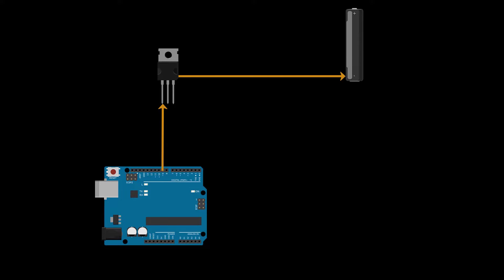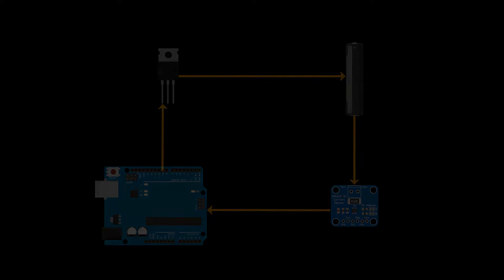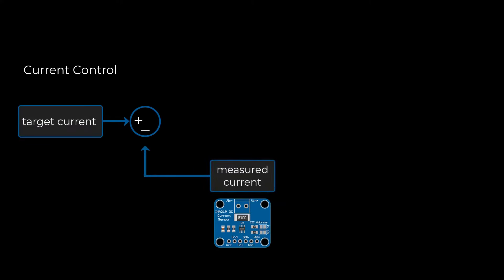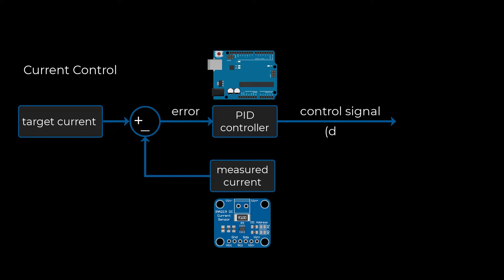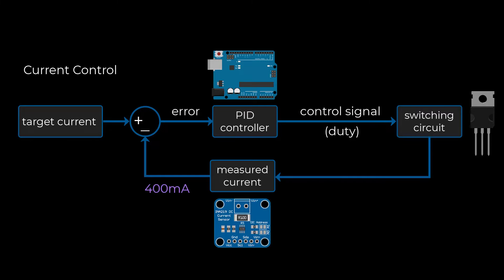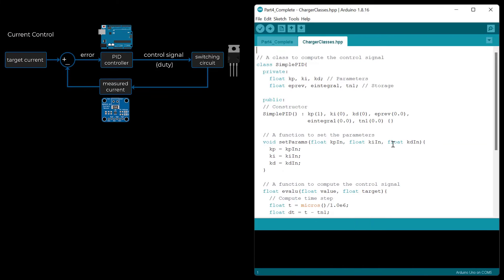With the charging circuit complete, we can write code to control the charging rate. Here's how the PID controller is set up. First, I'll set a target current. Then, I'll take the difference between the target and the INA219 current measurement to obtain the error. The PID controller will then compute the control signal, which is used as the duty cycle of the PWM signal driving the MOSFET. If the current is low, the controller will drive up the duty cycle, increasing the current. If the current is high, the duty cycle will be lowered.